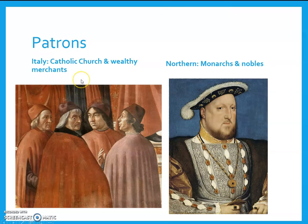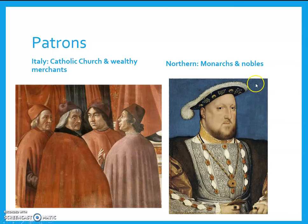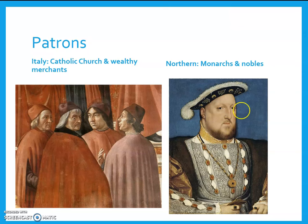The people paying for art in Italy were mostly the Catholic Church and wealthy merchant families. For instance, this altarpiece from Florence shows four members of the Medici family who paid for the entire church to be built, so the artist Ghirlandaio put them into the art. In the North, you more often see powerful monarchs and nobles as patrons — as they gained more power, artists flocked to them, like Hans Holbein the Younger's portrait of Henry VIII. That's not to say wealthy merchants didn't also fund art in the North, but you tend to see monarchs and nobility as well.